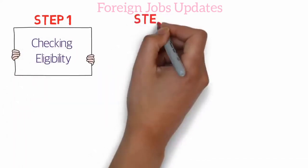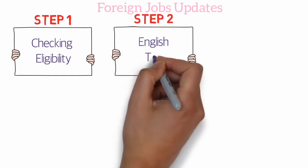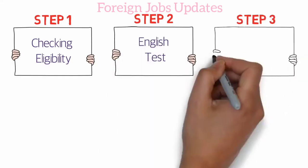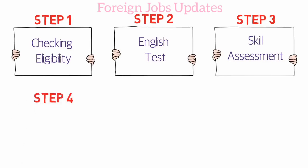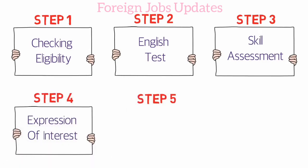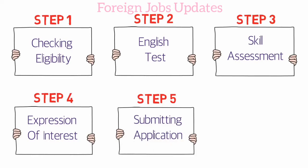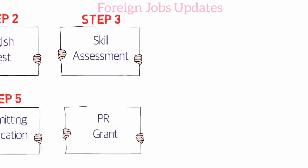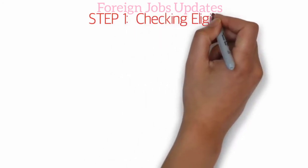Step 1 is the eligibility check. Step 2 is the English skill set. Step 3 is the skill assessment. Step 4 is the expression of interest. Step 5 is the application. The final step is the PR grant summary. In total, there are 6 steps.